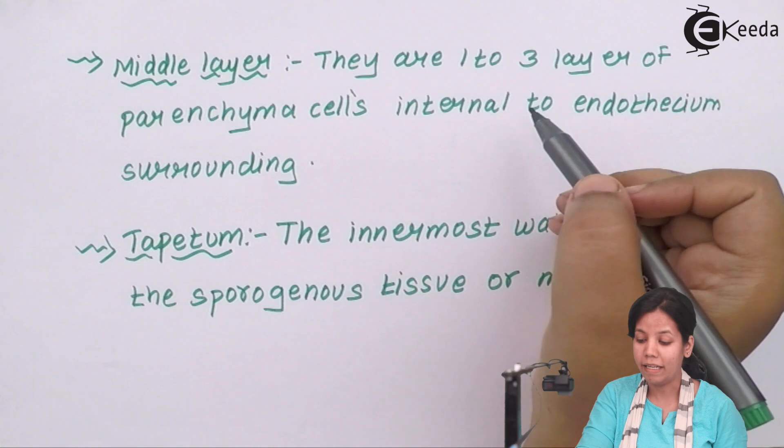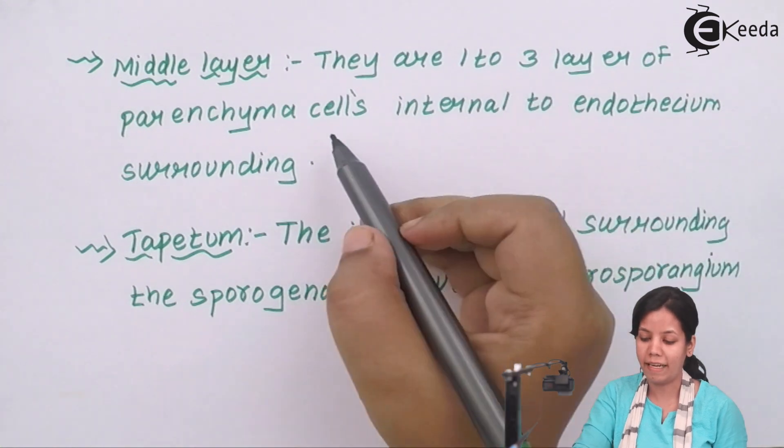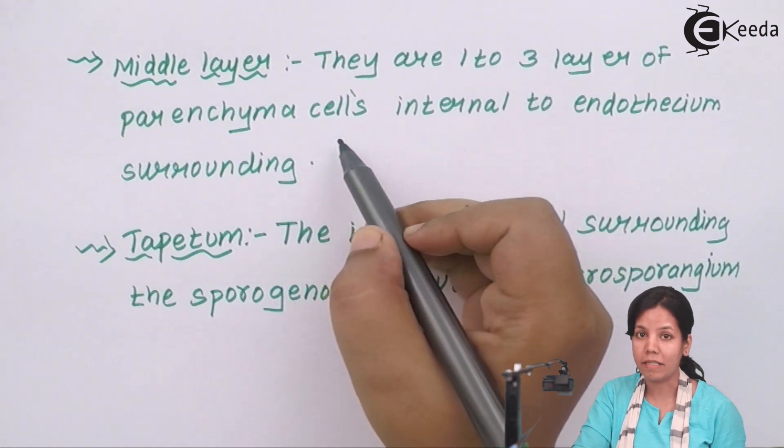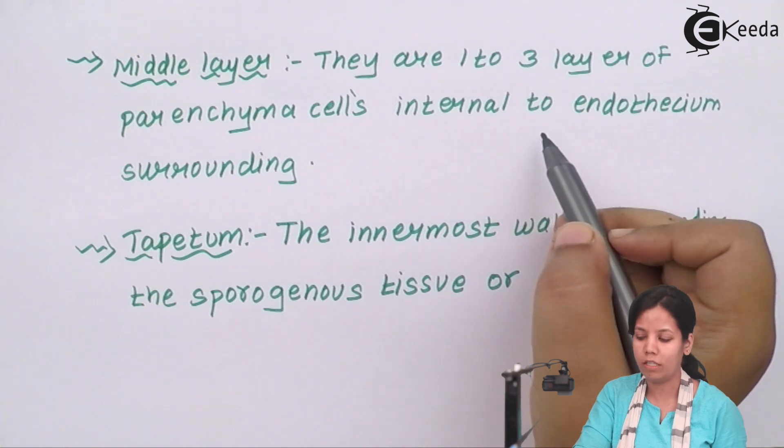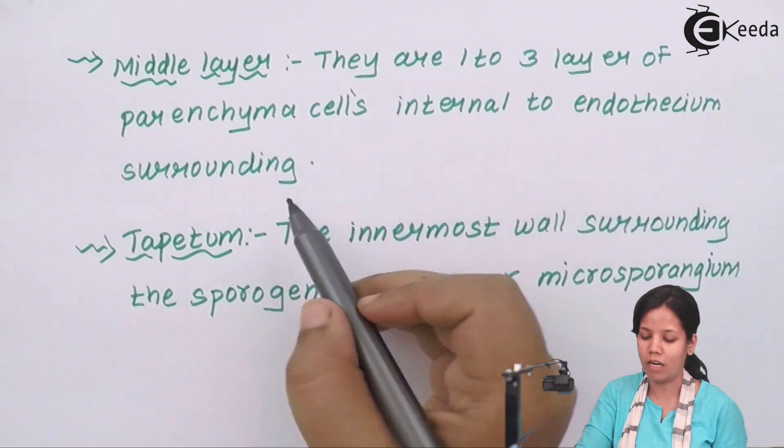Middle layer - there are one to three parenchyma cells and these parenchyma cells form internal to endothecium structure.